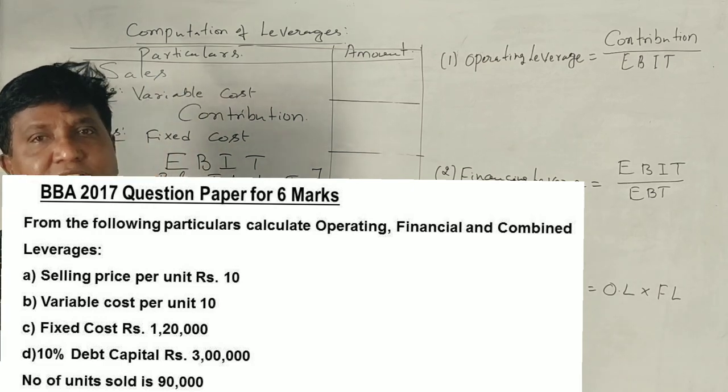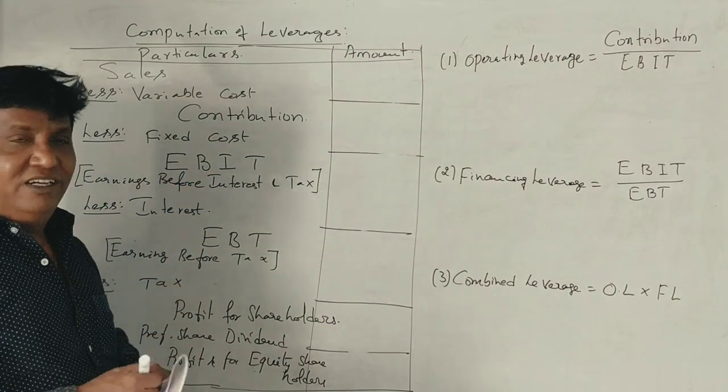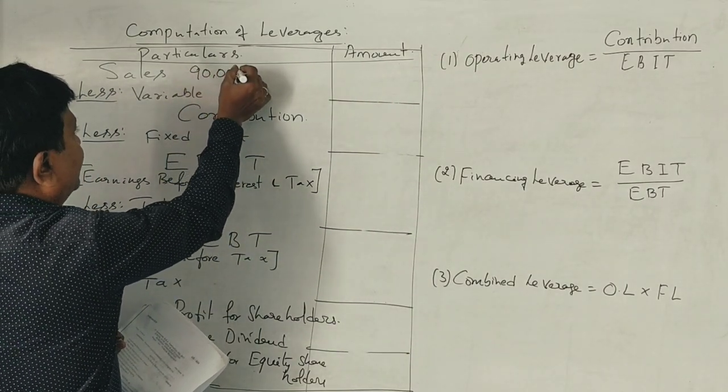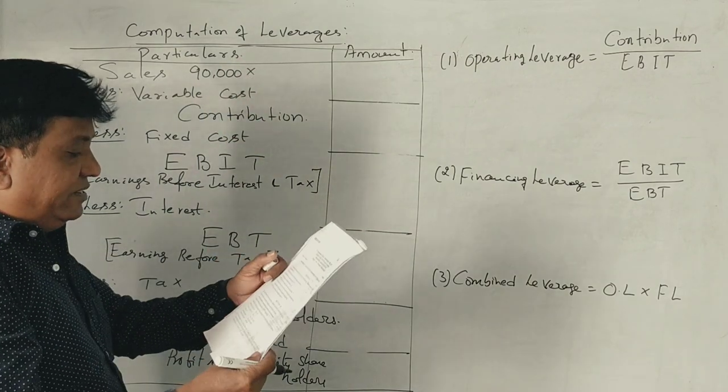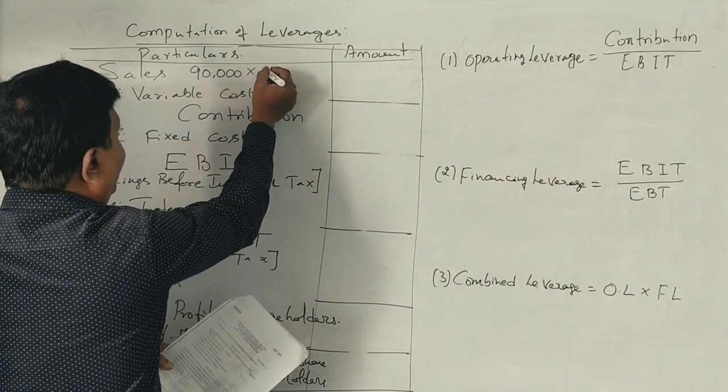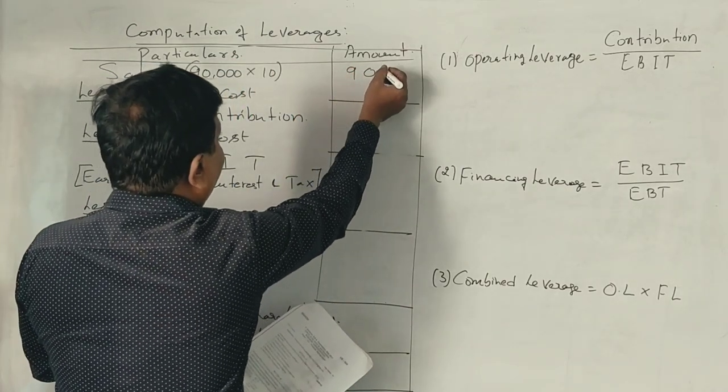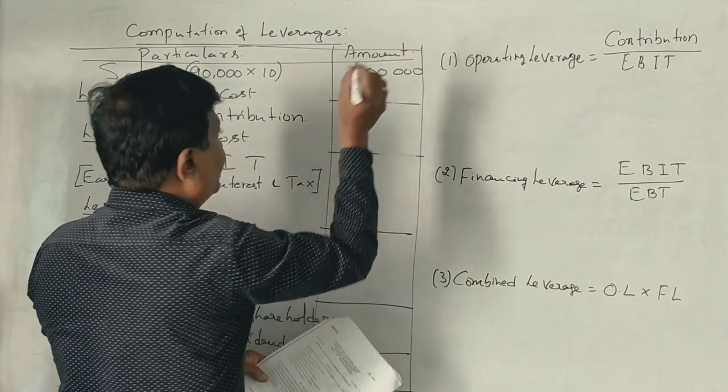Now how to solve this question. First we calculate sales. We have sold 90,000 units at Rs. 10 per unit. The sales comes to Rs. 9,00,000.